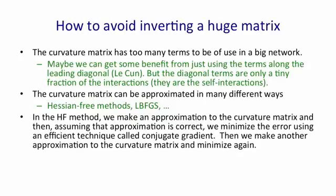In the Hessian-free method, we make an approximation to the curvature matrix and then we assume that the approximation is correct. So we assume we know what the curvature is and that the error surface really is quadratic. And then, starting from wherever we are now, we minimize the error using an efficient technique called conjugate gradient. Once we've done that, once we've got close to a minimum on this approximation to the curvature, we then make another approximation to the curvature matrix and we use conjugate gradient to minimize again.